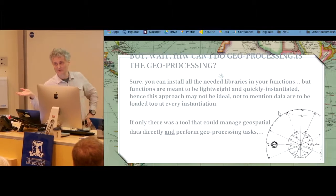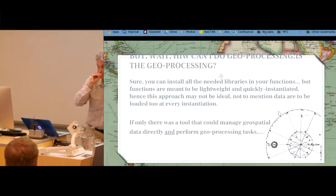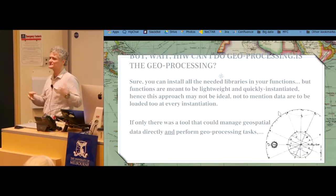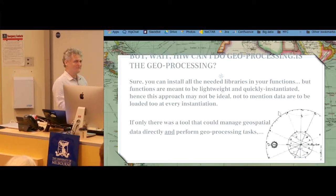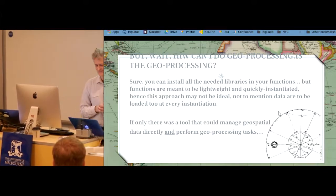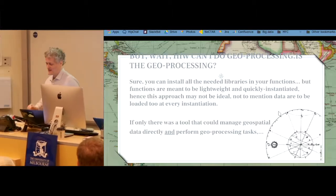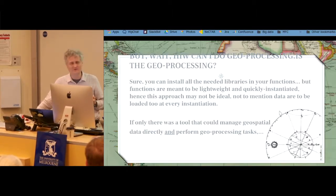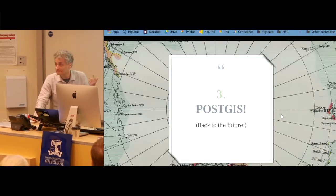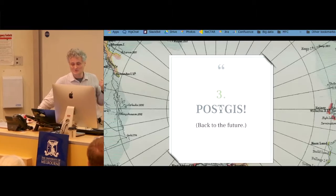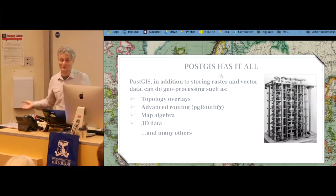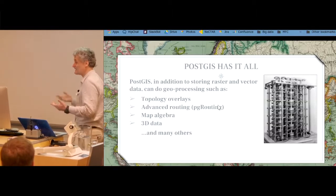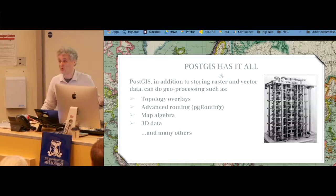But where's the geoprocessing bit? And where are the data? You can load packages in your function, but you still have to provide data. So I was looking for something better — if only there was a tool that handles data and can do a lot of geoprocessing on top of it. And luckily there is: good old PostGIS. PostGIS can really do it all: 3D, 2D, advanced routing, raster, topological overlays — hundreds of functions really. So why reinvent the wheel? That's why we built PG-FaaS.